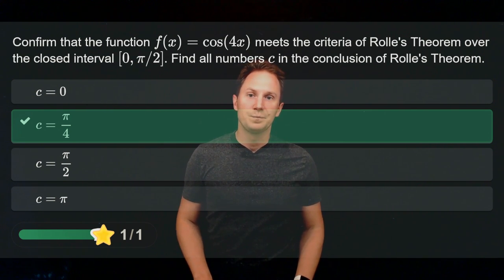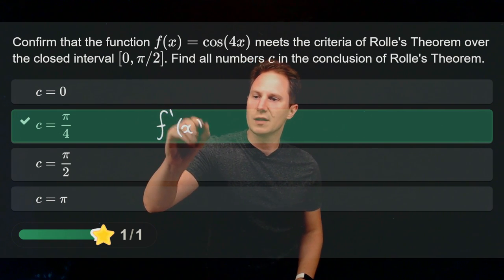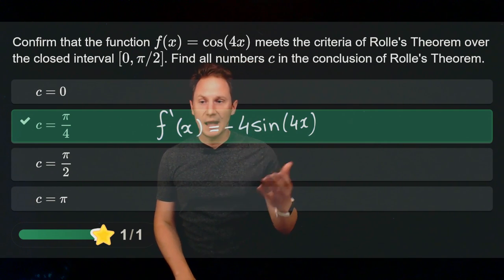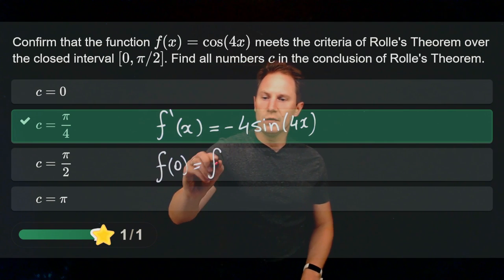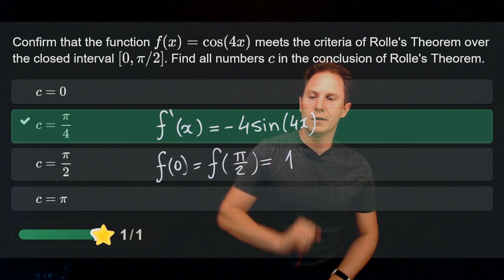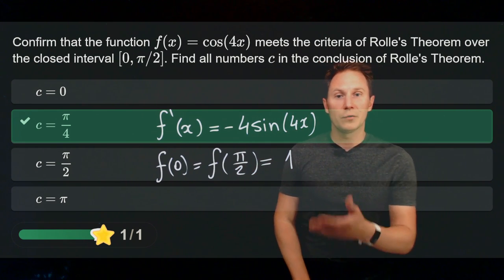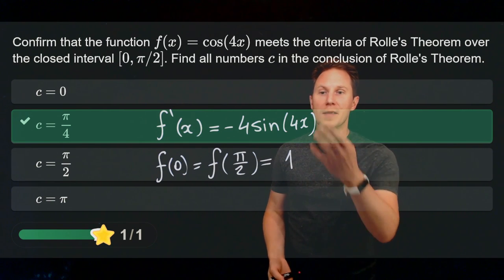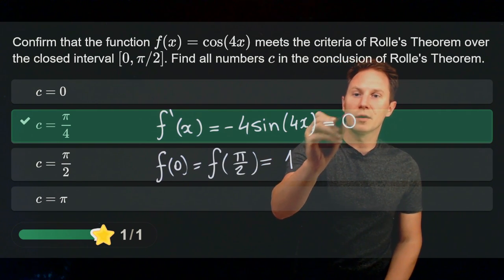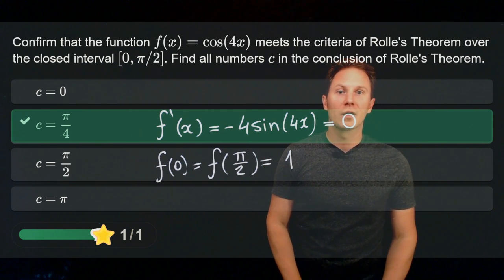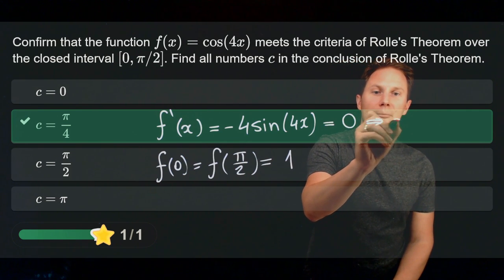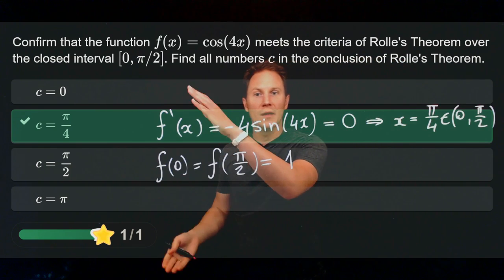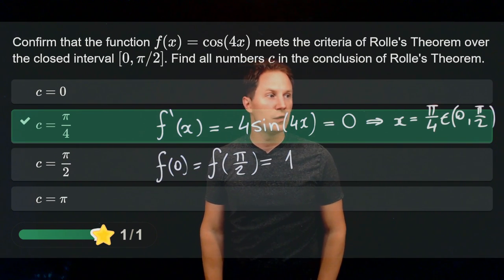Its derivative is −4 sin(4x). The endpoint values of the function on [0, π/2] are also equal — both are 1, being cos(0) and cos(2π). So Rolle's theorem applies, and indeed there is a number between 0 and π/2 where the derivative −4 sin(4x) vanishes, which is exactly at c = π/4. All other options are outside that open interval (0, π/2).